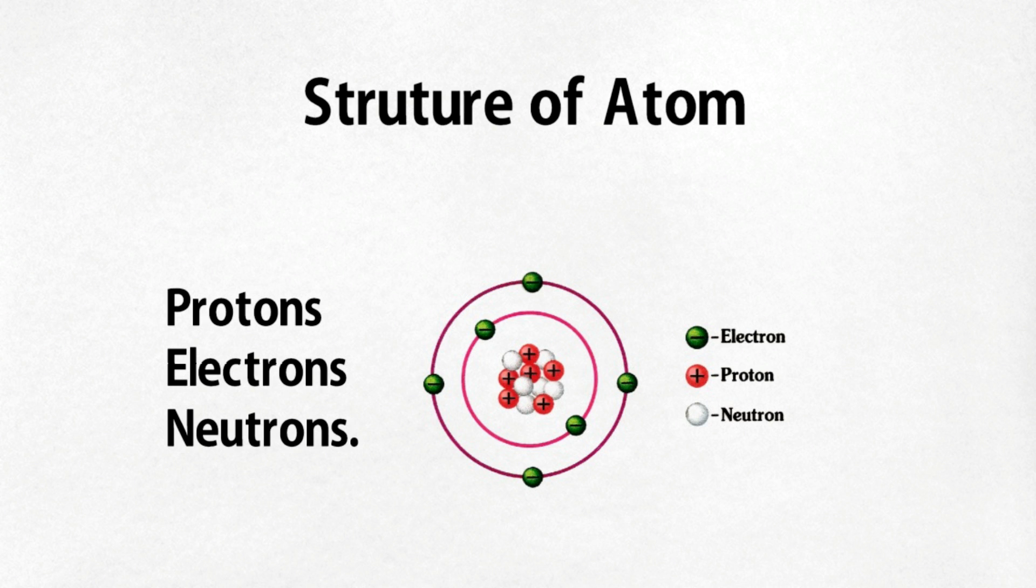The protons and neutrons cluster together in the central part of the atom called the nucleus, and the electrons orbit the nucleus.